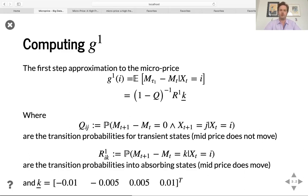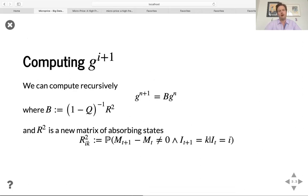So as you can see, this is once we've estimated the matrices Q and R, the computation is very fast. And then the next step is to iteratively compute successive refinements of or adjustments to the micro price. And this can be simply done with a simple matrix multiplication where here the R2 matrix is a new matrix of absorbing states.